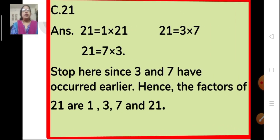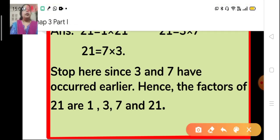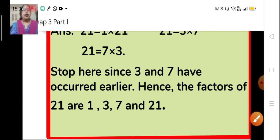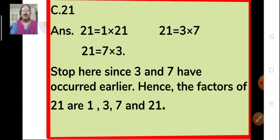Next number is 21. How do we find the factors of 21? We will write the pairs of numbers which when multiplied they will give 21. The first pair is 1 multiplied by 21. The second pair is 3 multiplied by 7, and the third is 7 multiplied by 3. We stop here because 3 and 7 were already taken. So the factors of 21 are 1, 3, 7 and 21.